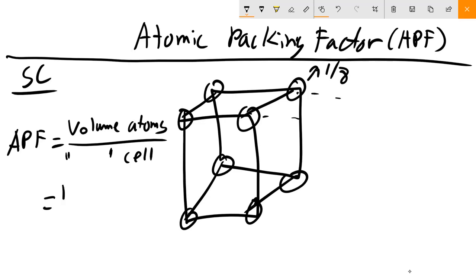We know each of these edge atoms contributes one-eighth. For simple cubic, the cell is not only a conventional unit cell but a primitive unit cell because there's only one atom in that cell. So we have one atom, and we're going to multiply that by the volume of the atom.